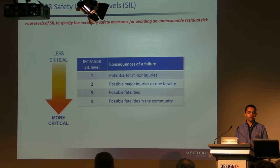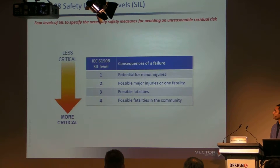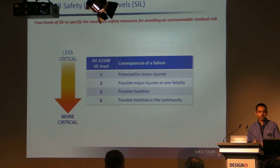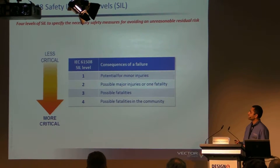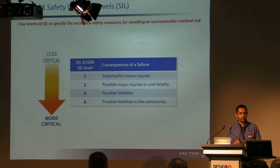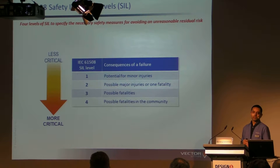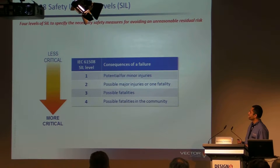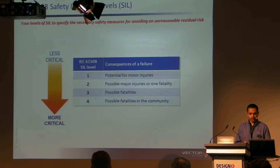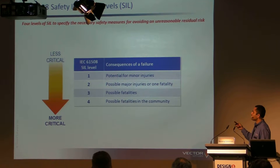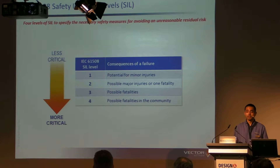So IEC 61508. As you're all probably aware, if you've had some exposure to IEC 61508, there are four levels of safety integrity levels. We start at level one, which is basically the least critical, all the way to level four, which is the most critical. So these are things like possibility of fatalities in the community at level four, level three is possible fatalities, level two is major irreversible injuries, and level one is minor injuries. Obviously the requirements we validate for the software increase as the SIL level gets higher.